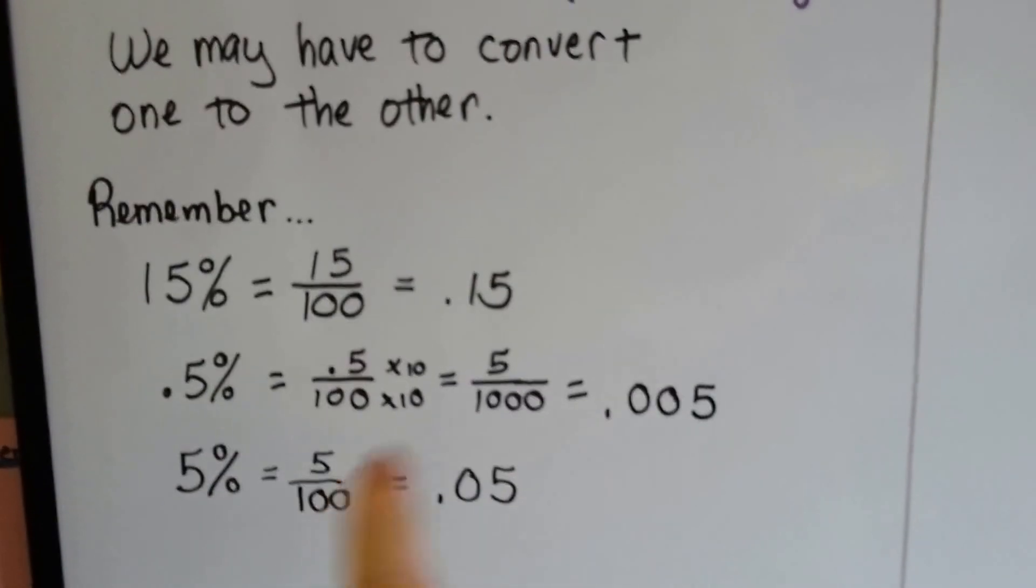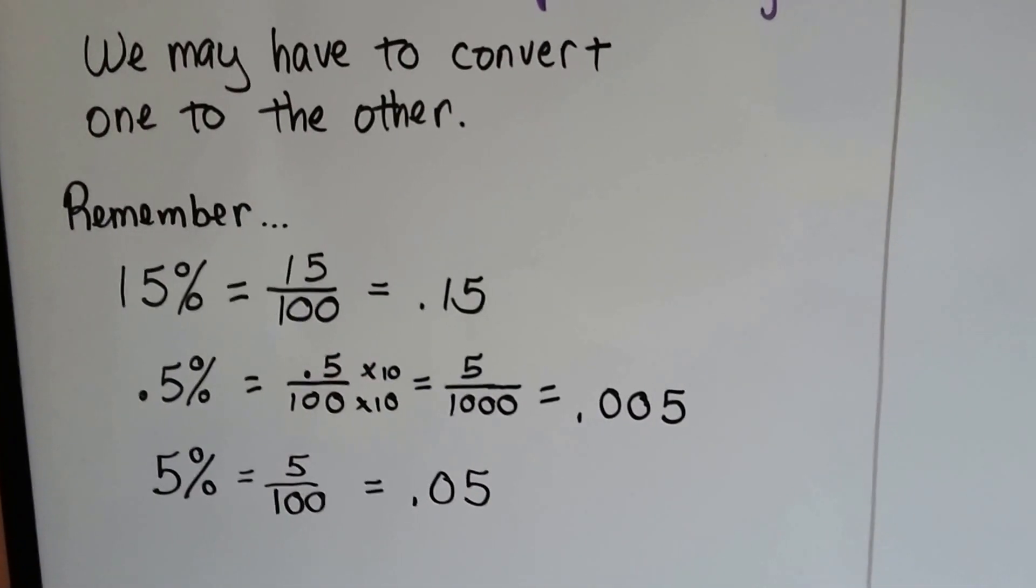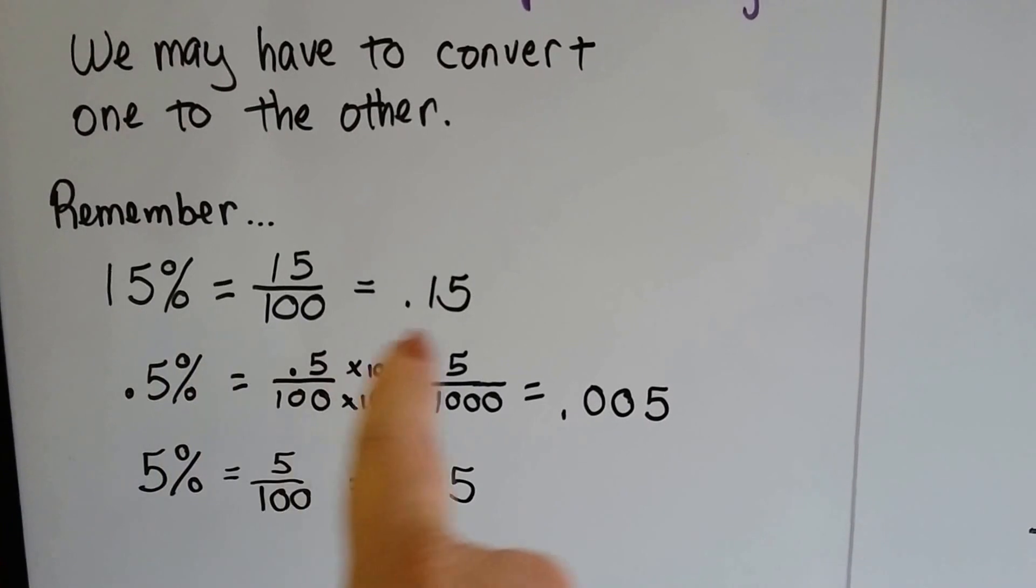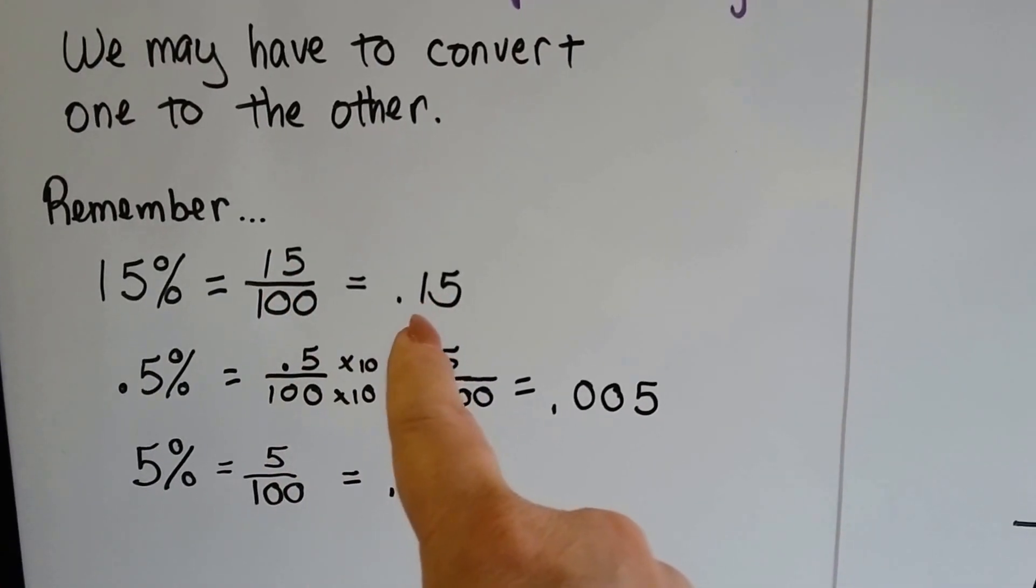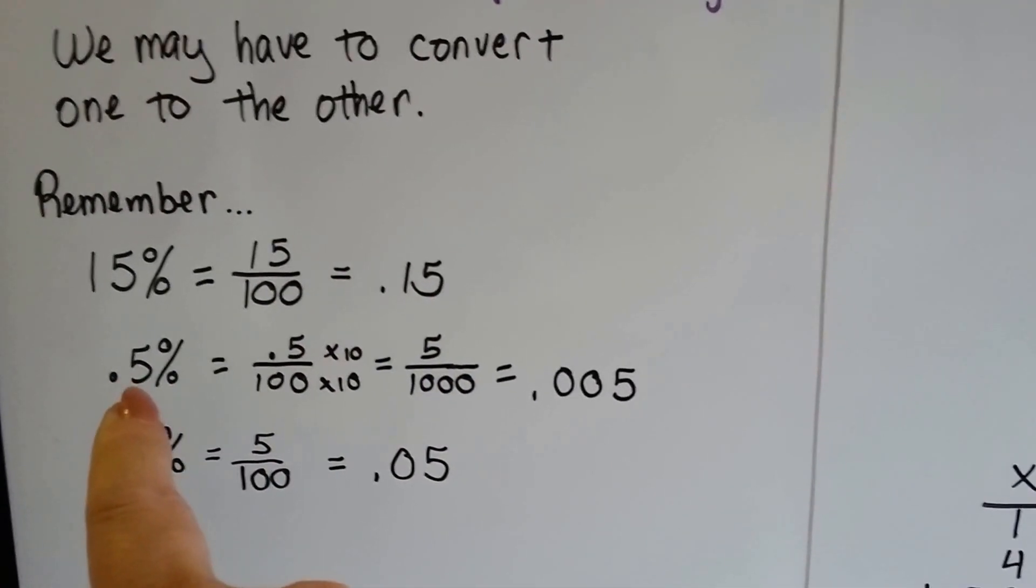So just remember how we convert fractions, decimals, and percentages. I don't know if you remember, but 15% is equal to 15 one-hundredths or 0.15. 0.5% means a half a percent.